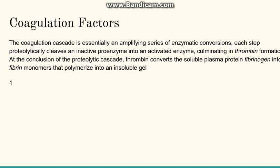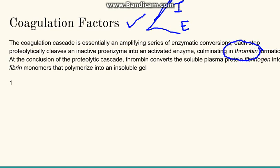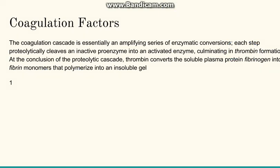Moving to the second part — the role of coagulation factors. The coagulation cascade is divided into two types: the intrinsic pathway and the extrinsic pathway. Each step leads ultimately to thrombin formation, and thrombin then converts fibrinogen into fibrin monomers, and finally fibrin polymers are formed.